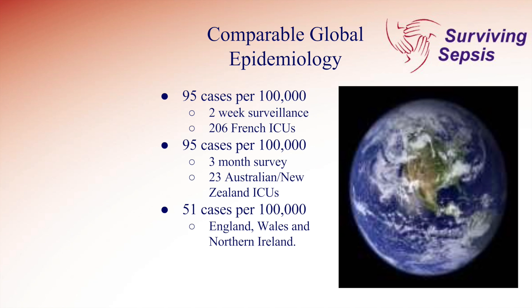Let's go through an example. Here's a slide from the Surviving Sepsis Campaign — a campaign to improve patients' survival from overwhelming infection. This slide covers epidemiology: 95 cases per 100,000 in France, 95 per 100,000 in New Zealand and Australia, and 51 cases per 100,000 in England, Wales, and Northern Ireland — with the point being that incidence is about the same across the globe. It's not a great slide, so let's improve it.